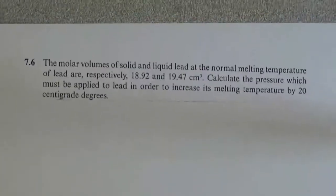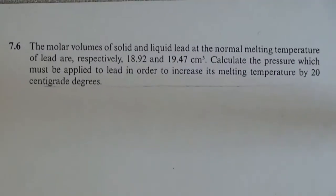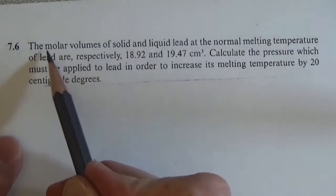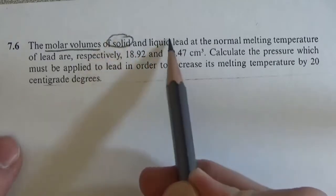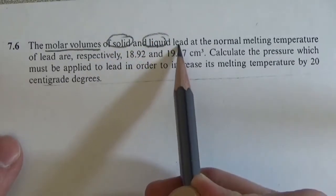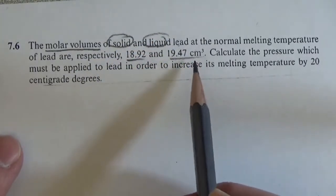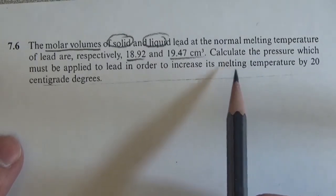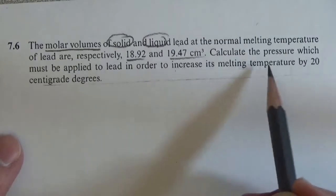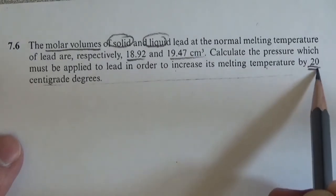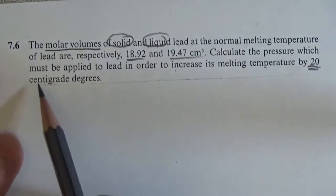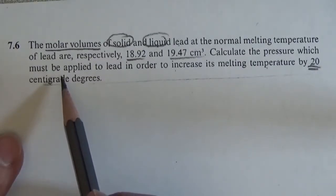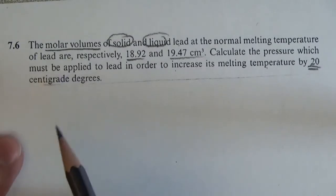In 7.6, we're given the molar volumes for the solid and the liquid of lead, and we're saying if we want to increase the melting temperature by 20K, what do we have to do as far as changing the pressure?